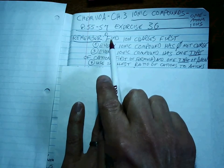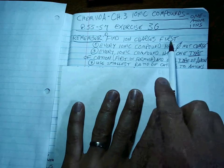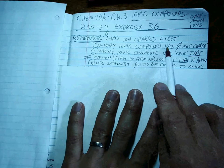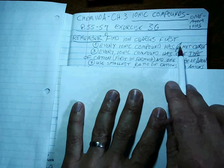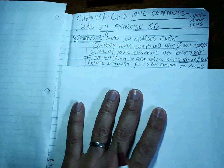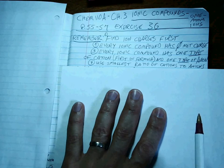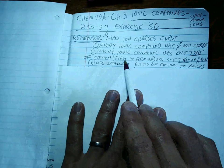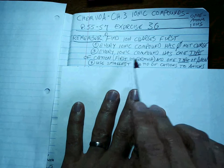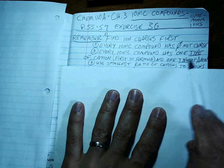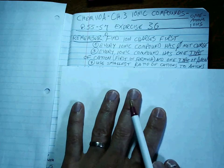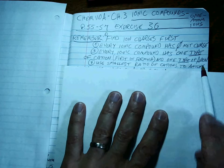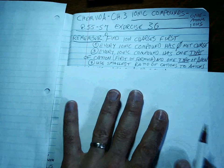Remember, the first job is to find the ion charges first. And then you have to remember how we make ionic compounds. Every ionic compound has a zero net charge, which means you add up all the ions and it has to equal zero. Every ionic compound has one type of cation, and that's the first one in the formula, and one type of anion. That's always the second.